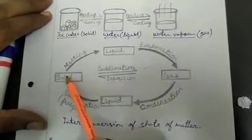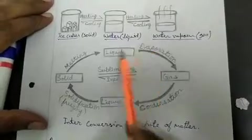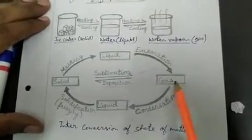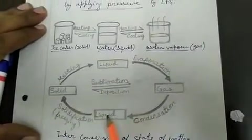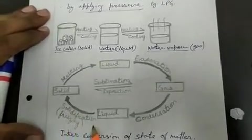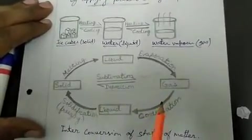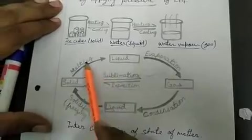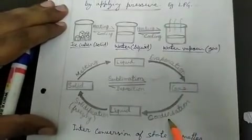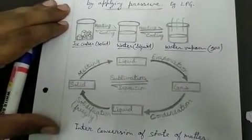Melting is the process of conversion of solid to liquid. Evaporation from liquid to gas. Again, gas to liquid is called condensation, and liquid to solid is called solidification. They occur at a fixed temperature, and that's called melting point, boiling point, condensation point, and freezing point.